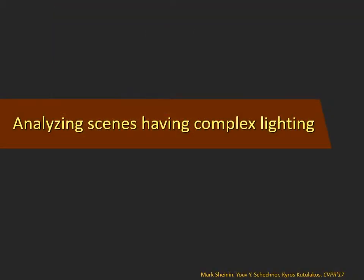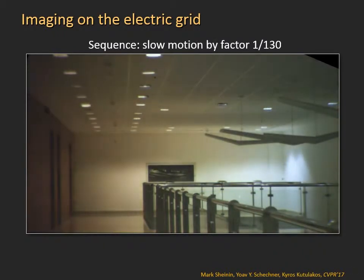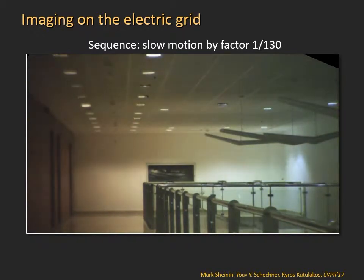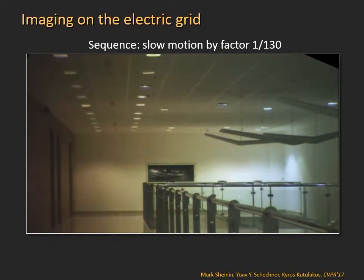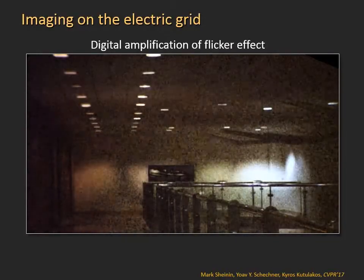Analysing scenes having complex lighting. Let's look at this hallway. Here is a conventional image, and here is an image sequence captured using our special camera system. The sequence spans the flicker cycle and is shown slowed down by a factor of 130, since it is too fast to be perceived by the naked eye. Here, the effect is digitally amplified for better visualisation.